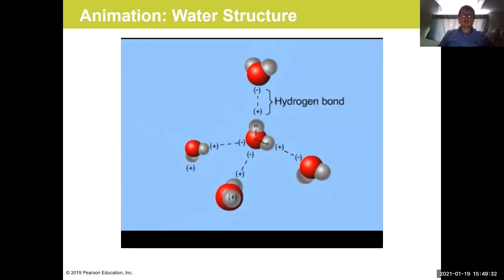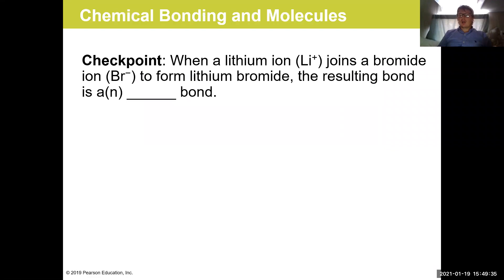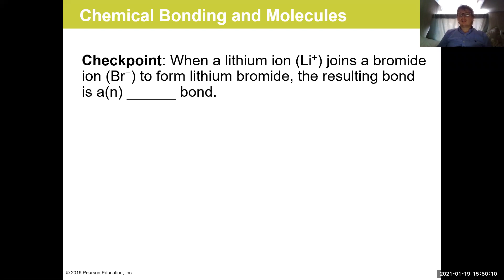Let's review: if a lithium ion (Li+) joins a bromide ion (Br−) to form lithium bromide, the resulting bond is an ionic bond — because lithium is donating an electron to bromide, and positive and negative ions are being attracted to one another to form that ionic bond.